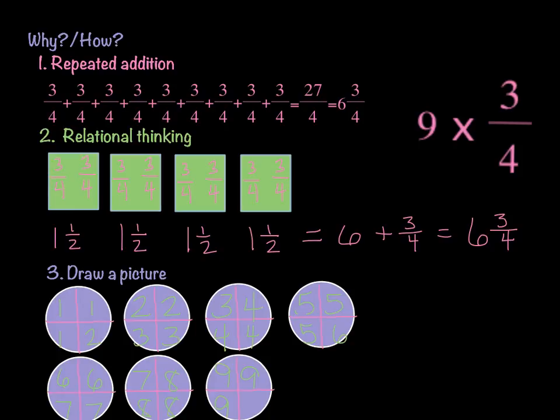4 of those is equal to the whole number 3, so that would be these 4. 1 and 1 half plus 1 and 1 half is 3. Then 8 of those, which would be all of these, would be equal to 6.